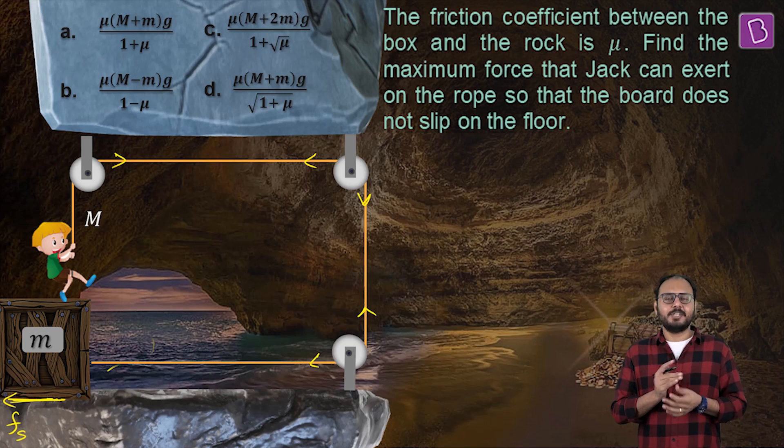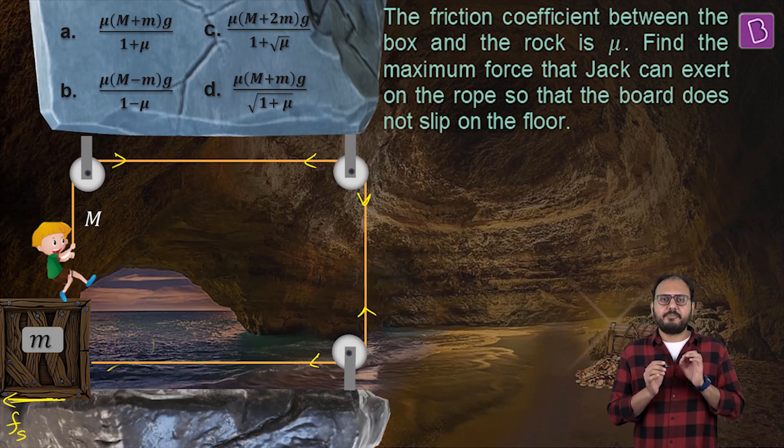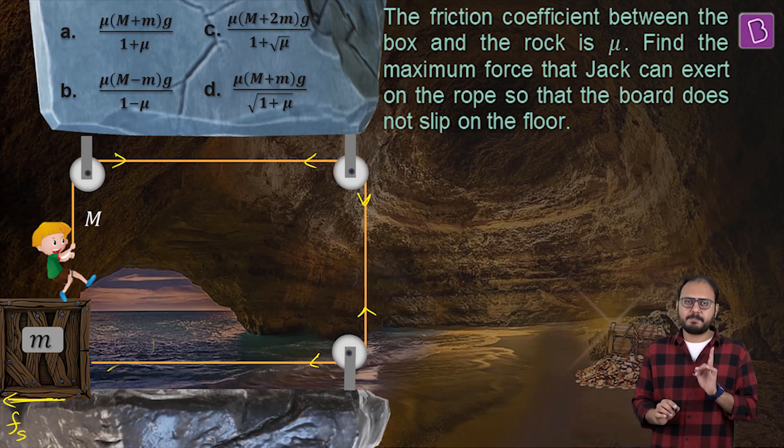In other words, the maximum effort of Jack - the maximum effort of Jack till no slipping happens is when the friction acting between the box and the ground is FS maximum. That's point number one.